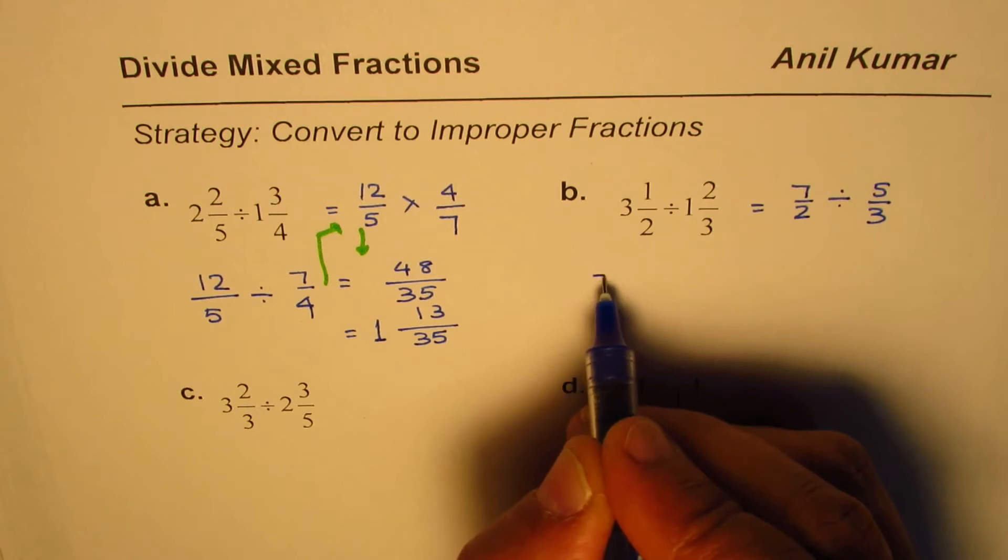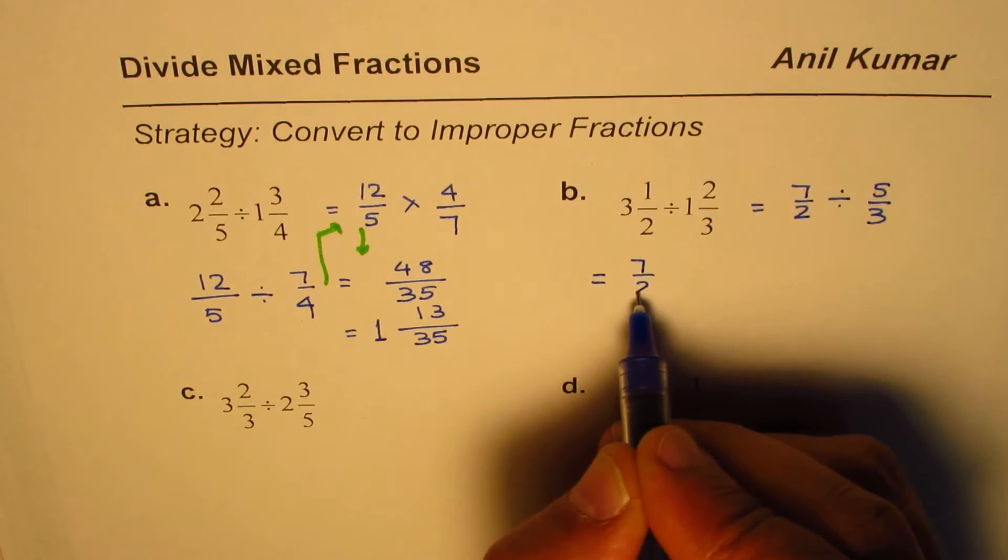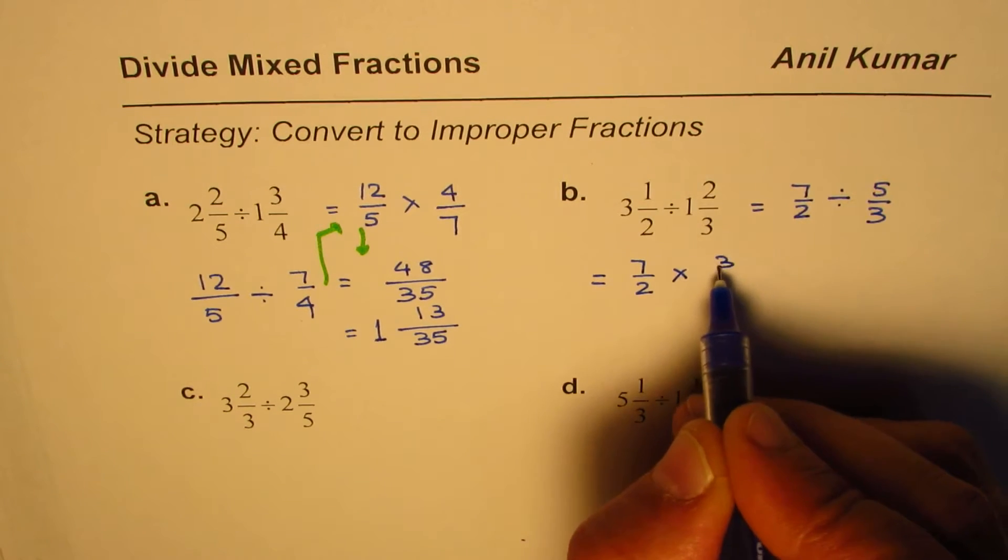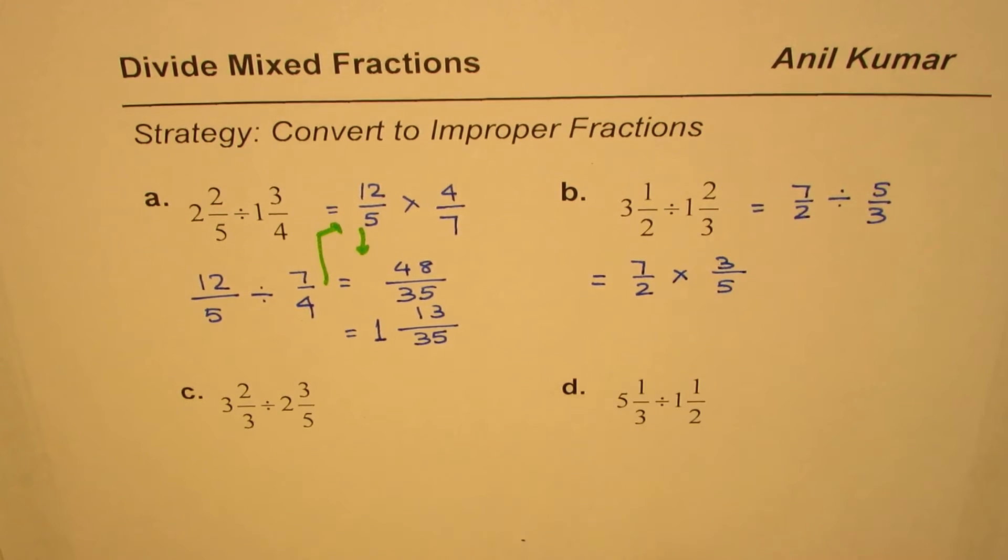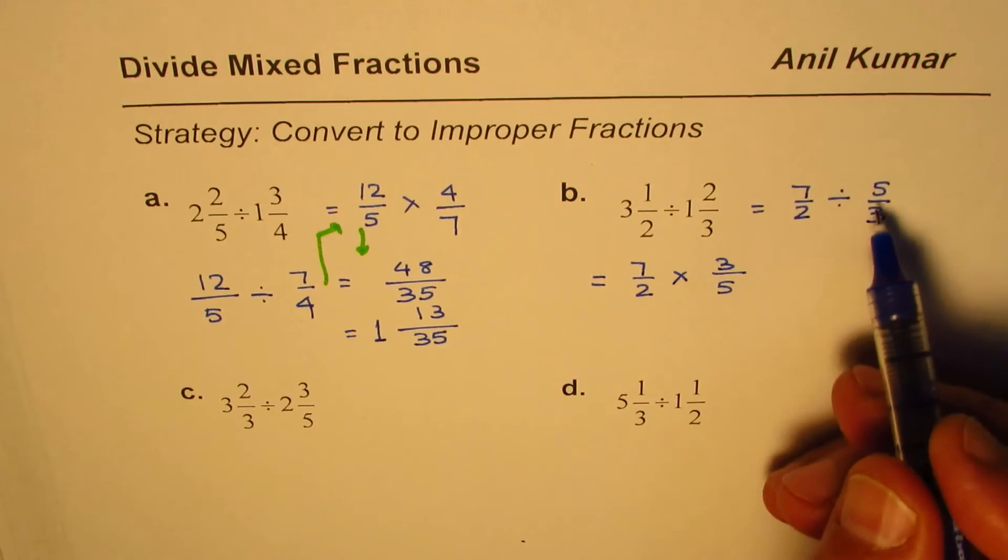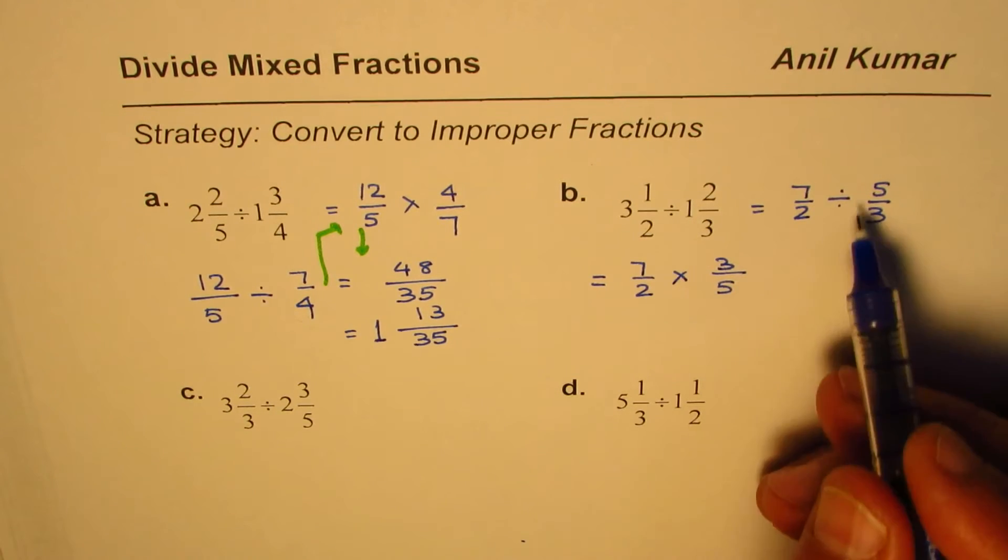Now this could be written as 7/2 times 3/5. Since multiplication is the reciprocal of division, you flip this part and multiply instead of dividing.